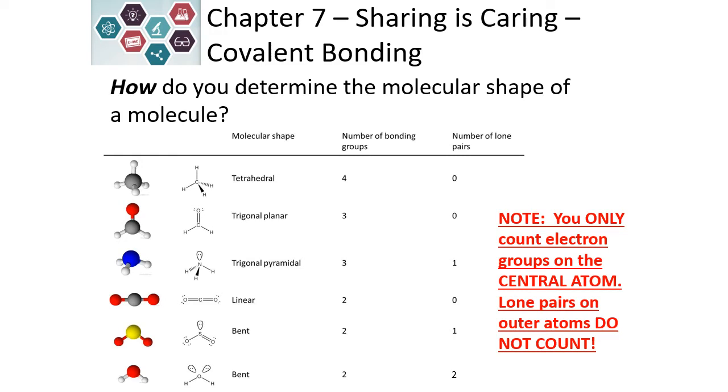If we have four bonding groups and no lone pairs, that shape is called tetrahedral. If we have three bonding groups and no lone pairs, that shape is called trigonal planar. If we have three bonding groups and one lone pair, it's called trigonal pyramidal or pyramidal. If we have two bonding groups and no lone pairs, it is a linear molecule. If we have two bonding groups and one lone pair, it is bent. And if we have two bonding groups and two lone pairs, it is also bent. This is a handy table to use when determining the shape.